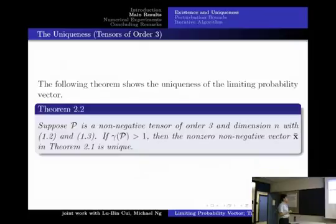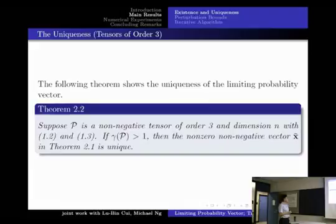Then we have the result as follows: Theorem 2.2. Suppose P is a non-negative tensor of order 3 and dimension n with conditions 1.2 and 1.3. If gamma P is larger than 1, then the non-zero non-negative vector x-bar in Theorem 2.1 is unique.